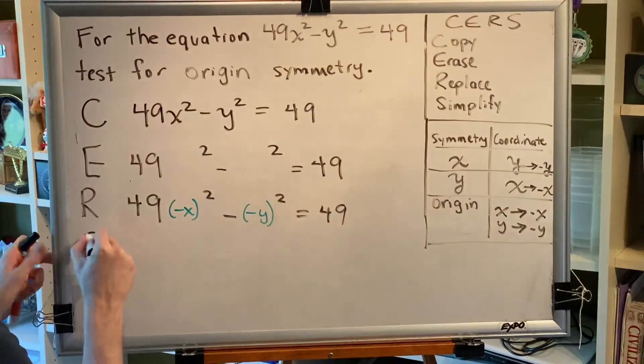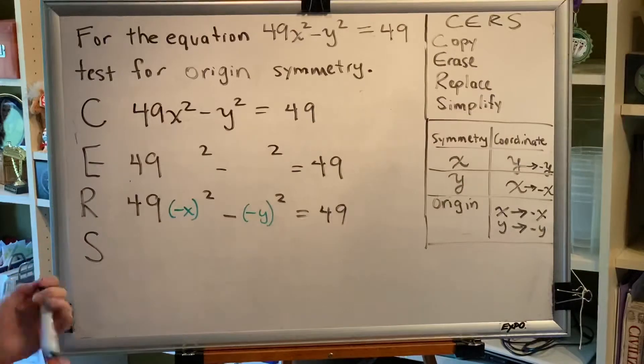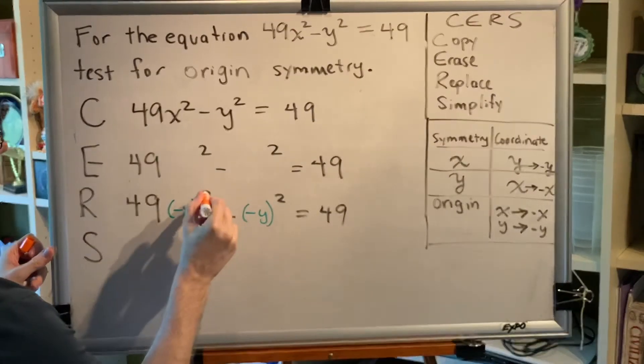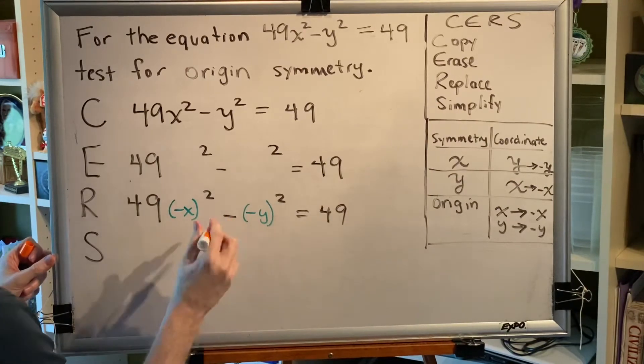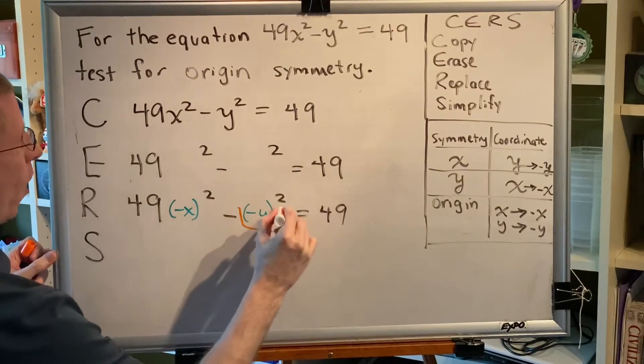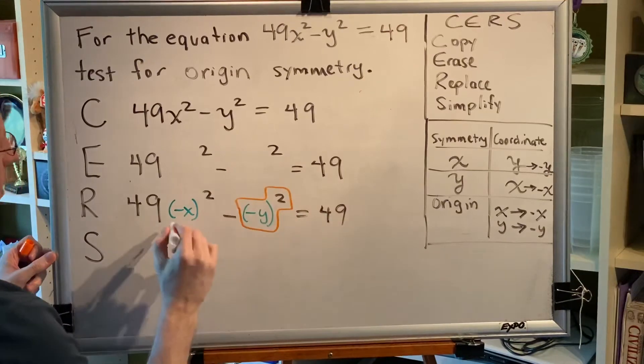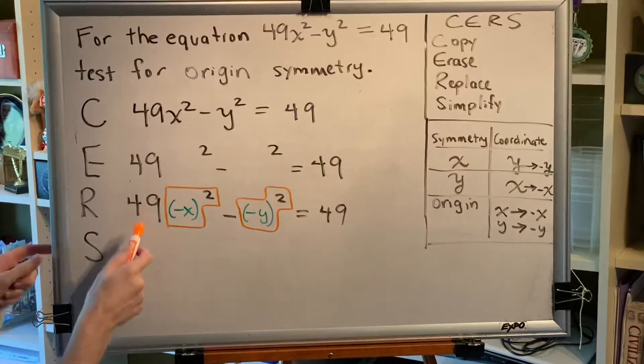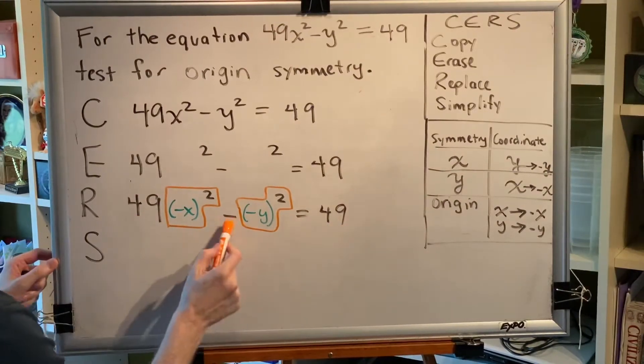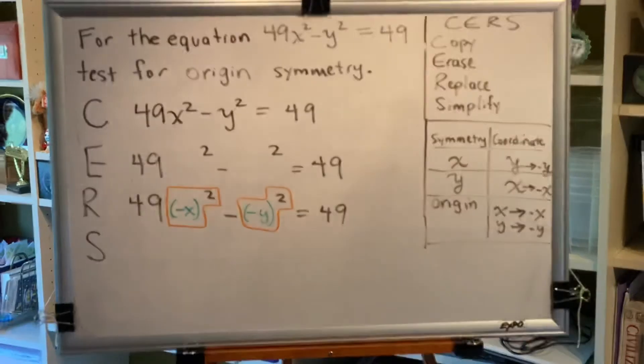Next, simplify. You have to follow order of operations here. Exponents, like this 2 and this 2, happen before this subtraction, which means we need to figure out what this is first and what this is first. Then we'll worry about this 49, this 49, and this subtraction symbol.